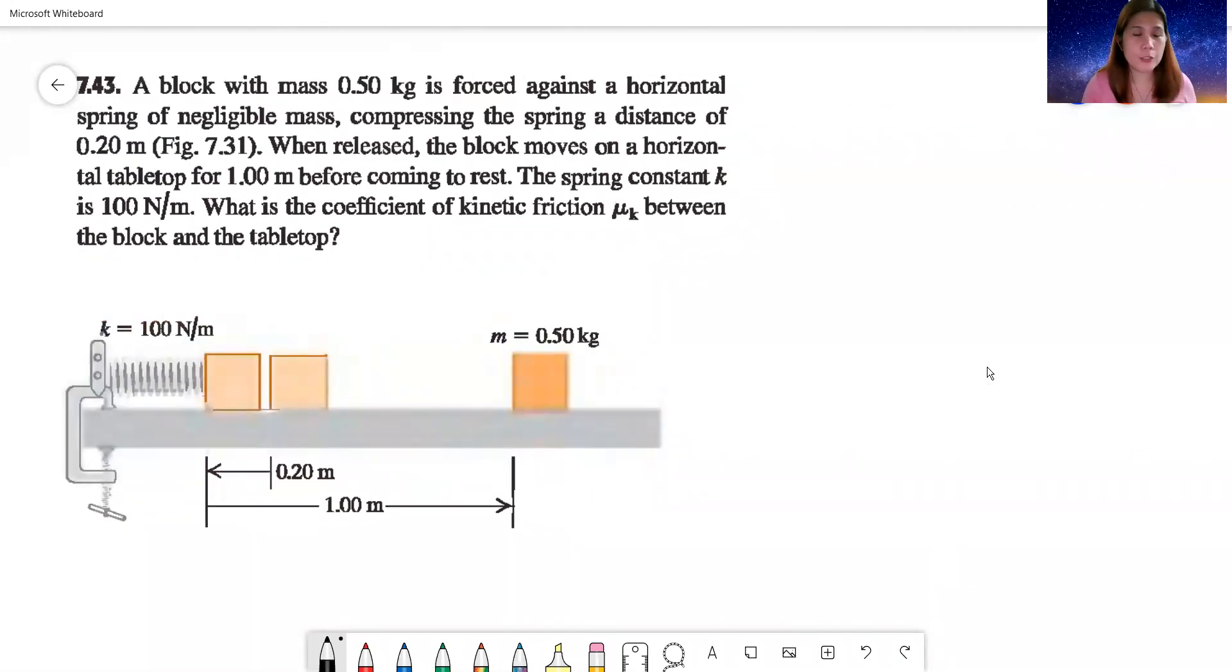This is from University Physics by Young and Friedman. The problem goes like this. A block with mass, half a kilogram, is forced against a horizontal spring of negligible mass, compressing the spring a distance of 0.20 meter. When released, the block moves on a horizontal tabletop for one meter before coming to rest. The spring constant k is 100 newtons per meter. We are to determine the coefficient of kinetic friction, mu sub k, between the block and the tabletop.